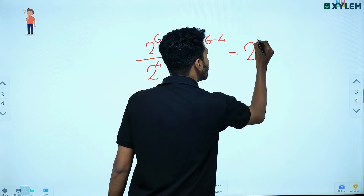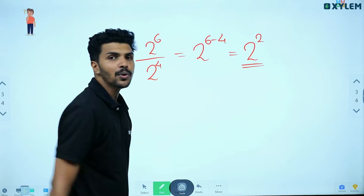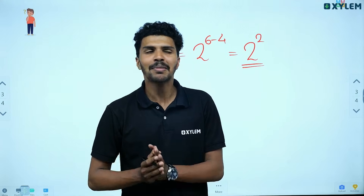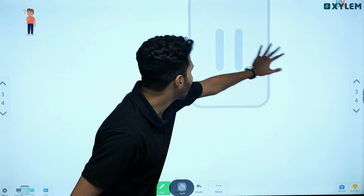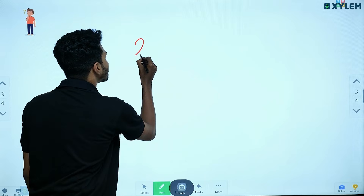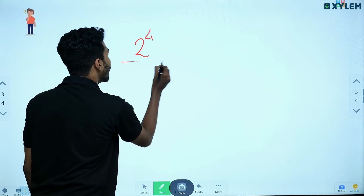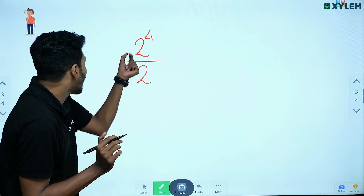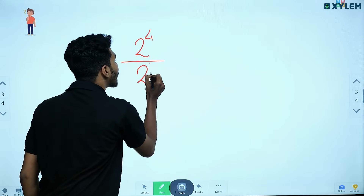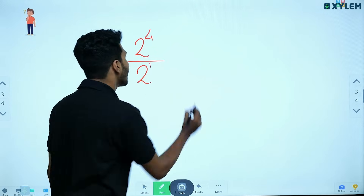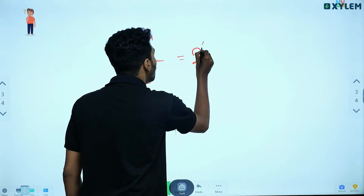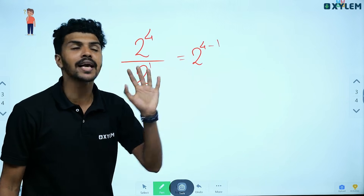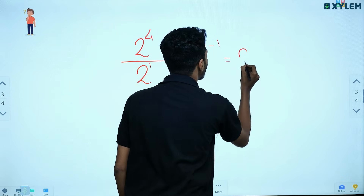The answer is 2 squared. 2 squared is very simple. Another example: 2 raised to 4 divided by 2 raised to 1. The answer is 2 raised to 4 minus 1, that is equal to 2 cubed.